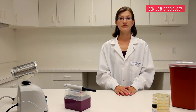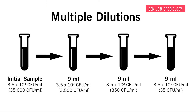We use multiple dilutions to decrease the sample concentration by multiple logs. Here is an example. If the concentration starts at 35,000 CFU per milliliter, or 10 to the fourth, and 35 CFU per milliliter is the target concentration, we would do three serial dilutions. We would take 1 milliliter from the initial tube and place it in 9 milliliters — this would equal 3,500 CFU per milliliter, or 10 to the third. Another dilution would take the concentration to 350 CFU per milliliter, or 10 to the second.